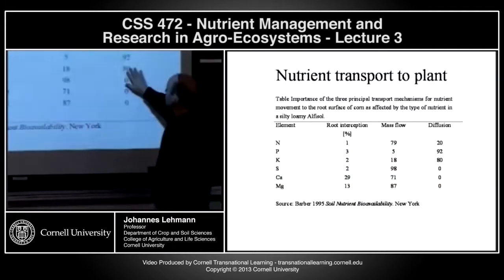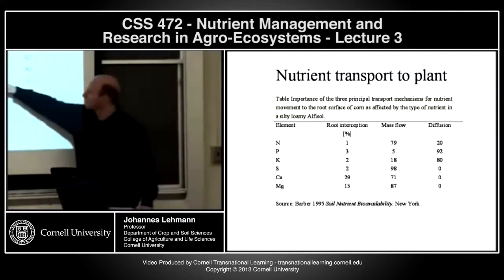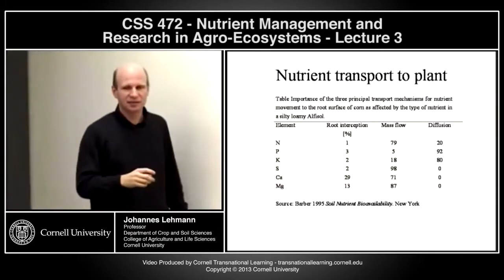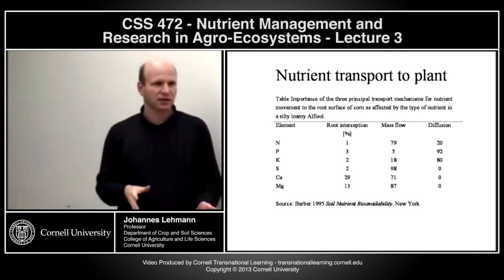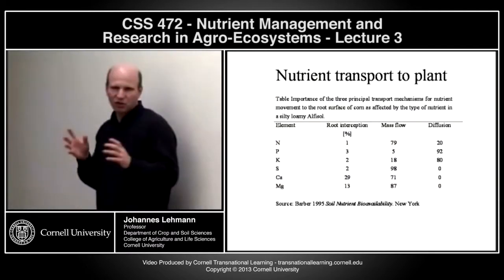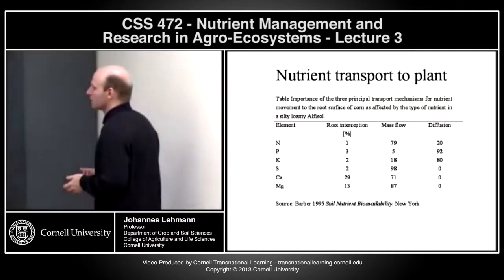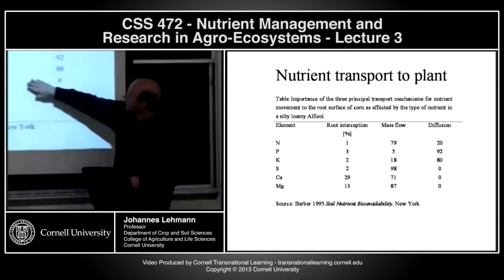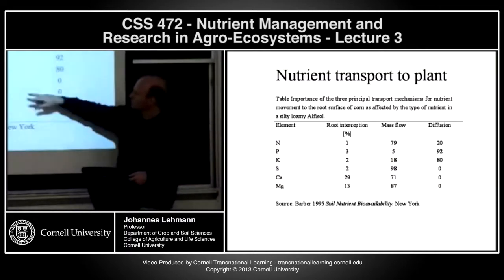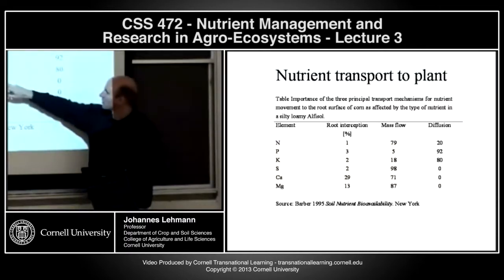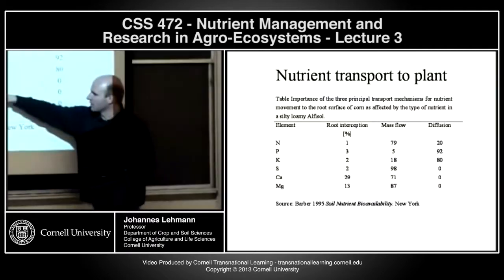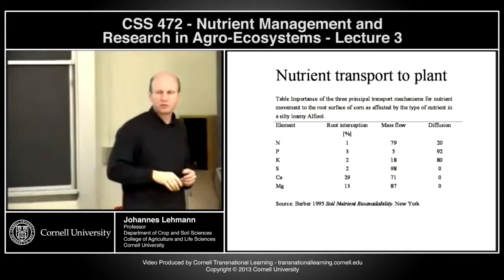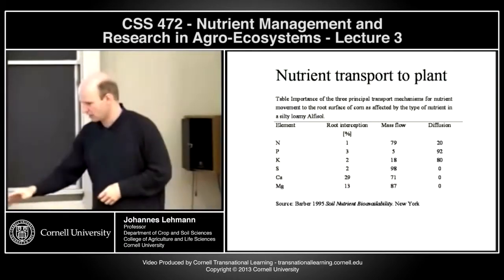Potassium is quite similar to phosphate — a little bit more mass flow, but in an Alfisol there is a possibility for potassium fixation, which depends very much on the clay mineralogy. It can also be highly leachable or absorbed very, very strongly. Sulfate has very little strong adsorption in an Alfisol, so we find a lot of mass flow similar to nitrate. For calcium and magnesium, there is a lot of mass flow as well, but also root interception — the root actually goes to locations of high calcium concentration and takes it up.